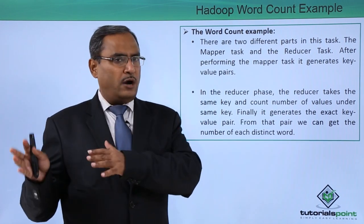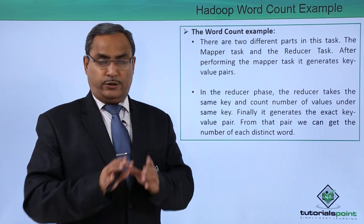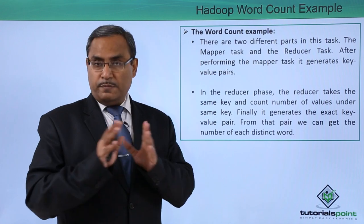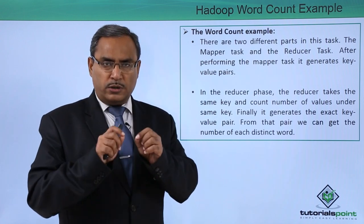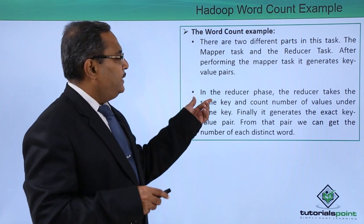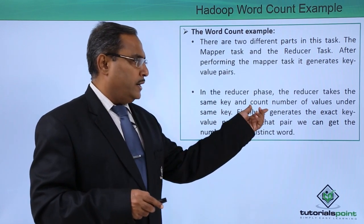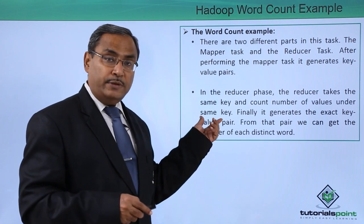Mapper will produce output that is a key value pair, but for each and every word it will not check whether the word has repeated or not. It will produce the word as a key and then one as a value. In the reducer phase, the reducer takes the same key and counts number of values under the same key.